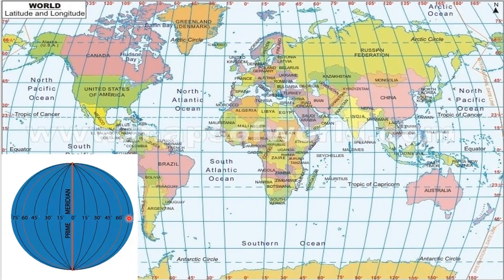That is, it takes 60 minutes or 1 hour to cross 15 degrees of longitudes. There are totally 360 lines of longitudes. 360 divided by 15, we get 24 — and a day has 24 hours. So the places in one standard time zone have the same time.